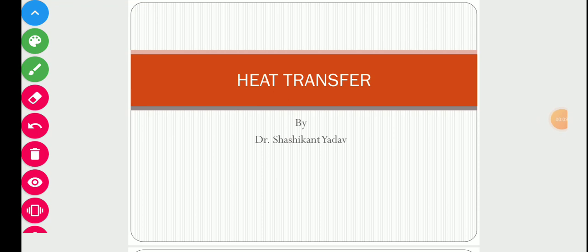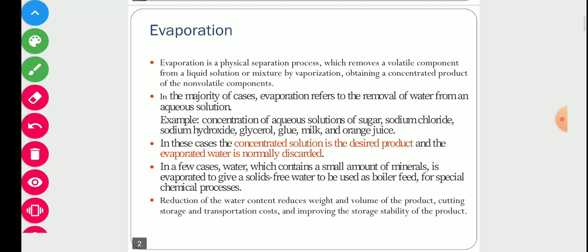Good morning. Today we will start with evaporators, which is a very important equipment used in the chemical industry. Evaporation is a physical separation process which removes a volatile component from a liquid solution or mixture by vaporization, obtaining a concentrated product of the non-volatile component. Basically, this is used to concentrate the solution, and in the majority of cases evaporation refers to removal of water from an aqueous solution.